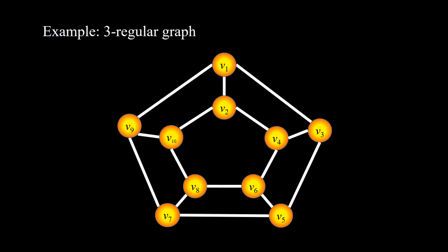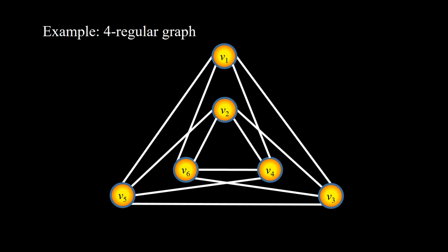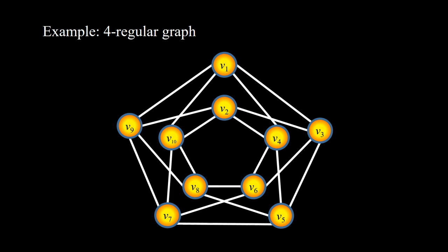Here is another example of a three-regular graph. The complete graph K5 is an example of a four-regular graph, along with several other examples of four-regular graphs that form a pattern.